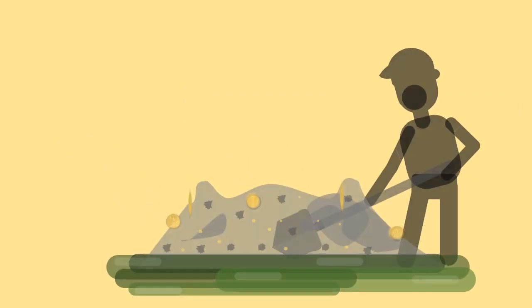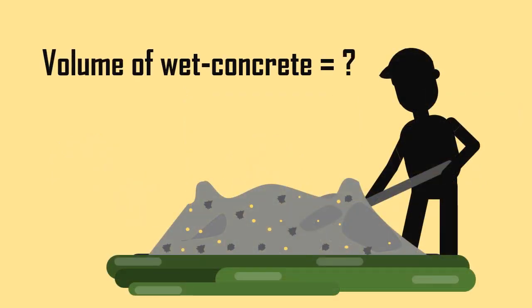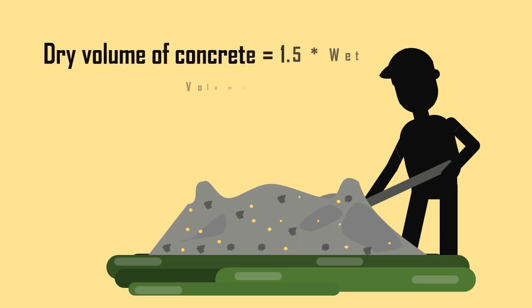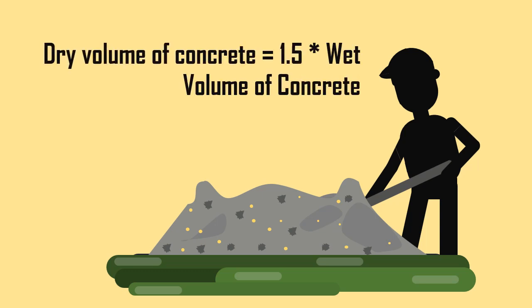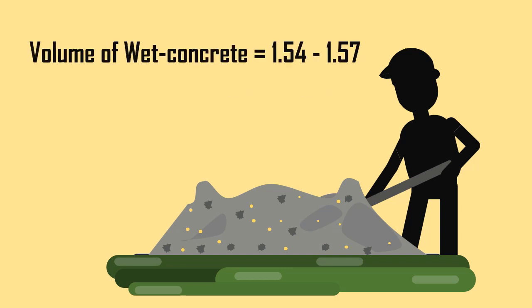The volume of wet concrete is a mixture of water and concrete ingredients. Generally, the dry volume of concrete is equal to one and a half times the wet volume — that is, the volume of wet concrete will be equal to 1.54 to 1.57.